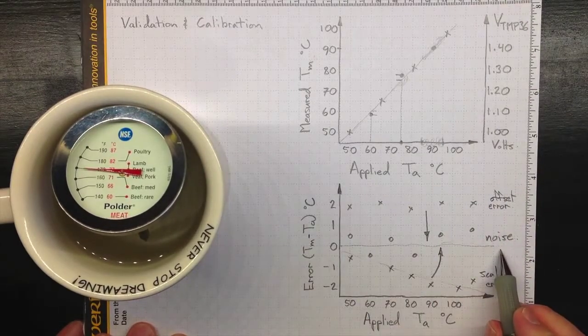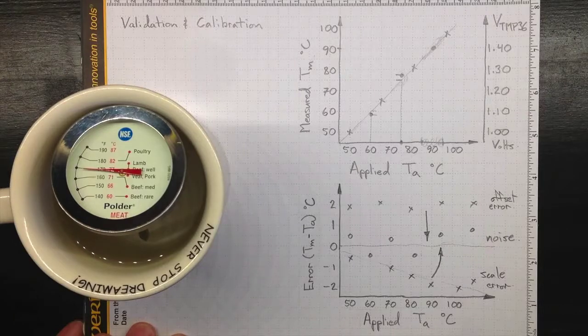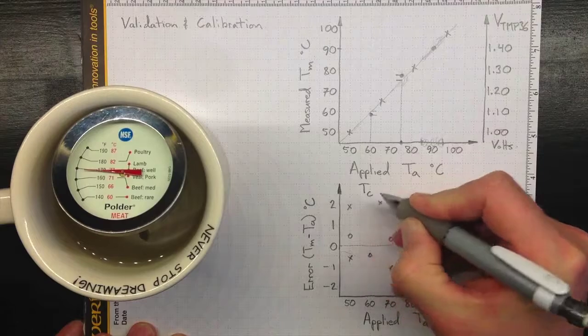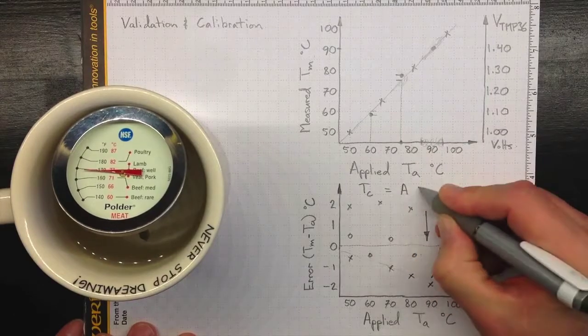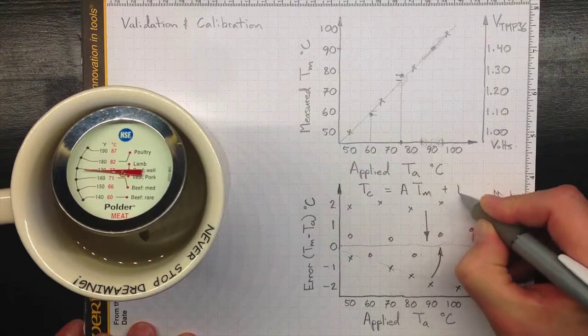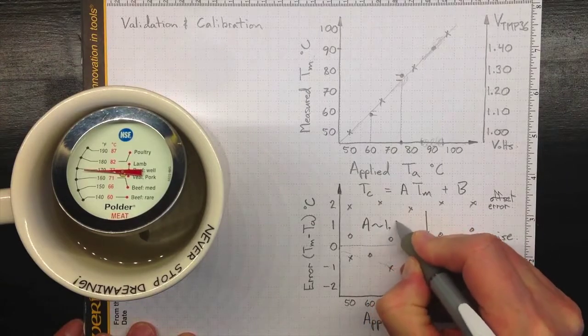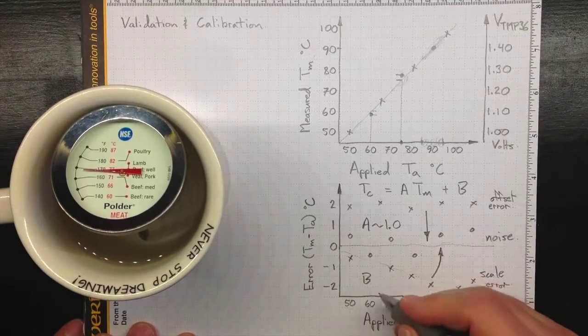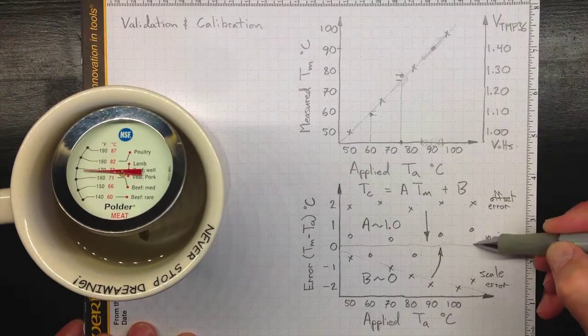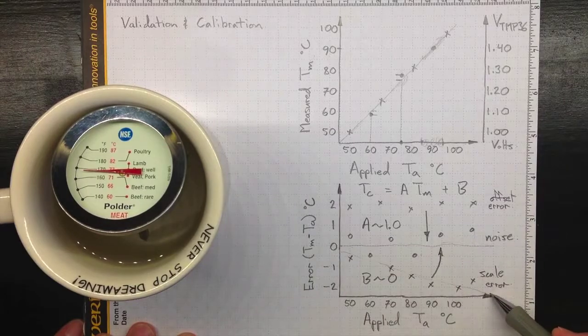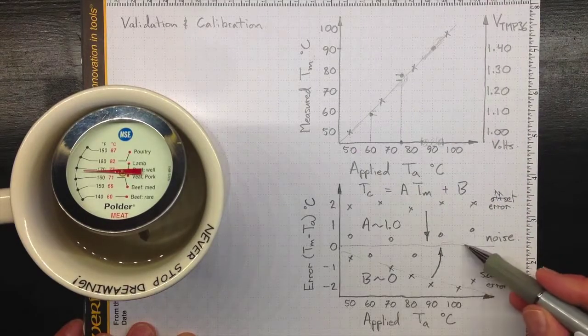And we can adjust that to swing that line back up here, closer to the zero line. If we wanted to have a calibrated temperature, if we wanted to make the best estimate of temperature that we could, we could take TC, corrected or calibrated temperature, equal to some value A times the measured temperature plus some value B. A really should be close to one. And B really should be close to zero. In this case, B is going to be negative two. We're going to pull it down here with a negative two. Here, in this case, A might be 1.02 to swing the 100 degree reading up by about two degrees.